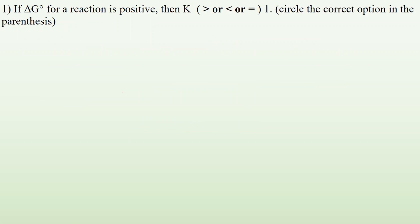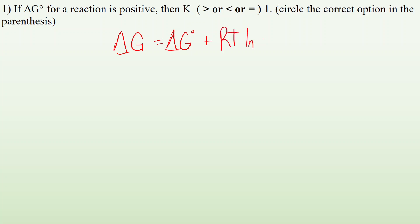Number one: if the delta G0 for a reaction is positive, then K — is it greater than, less than, or equal to one? Circle the correct option. So we start with delta G equals delta G0 plus RT times the natural log of Q. If we're at equilibrium, my delta G is going to be zero and my Q is going to be KEQ.